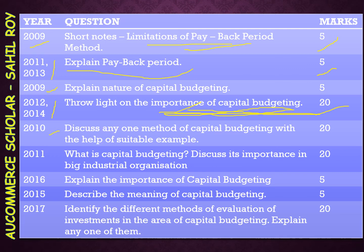Agla question 2010 mein poocha gaya for 20 marks: 'Discuss any one method of capital budgeting with the help of a suitable example.' Bahut saare methods hain — urgency method, payback period method jo bahut important hai, average rate of return method, discounted cash flow method, net present value method jo bahut important hai, internal rate of return method, aur profitability index method. In sabhi par sawaal pooche ja chuke hain.